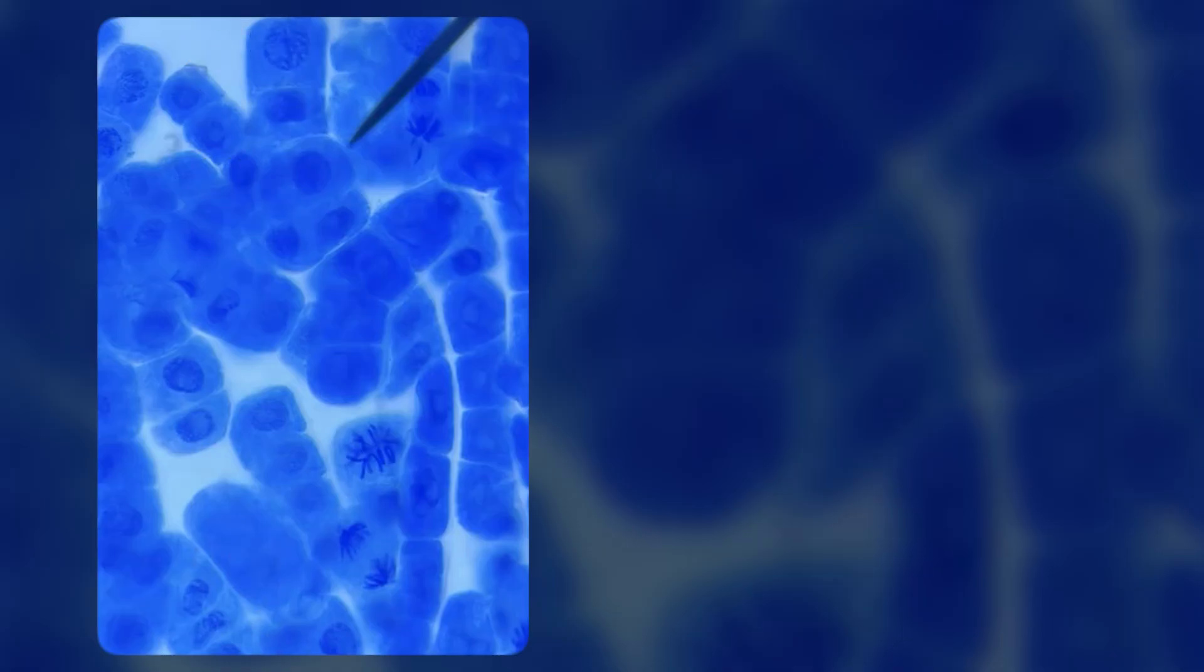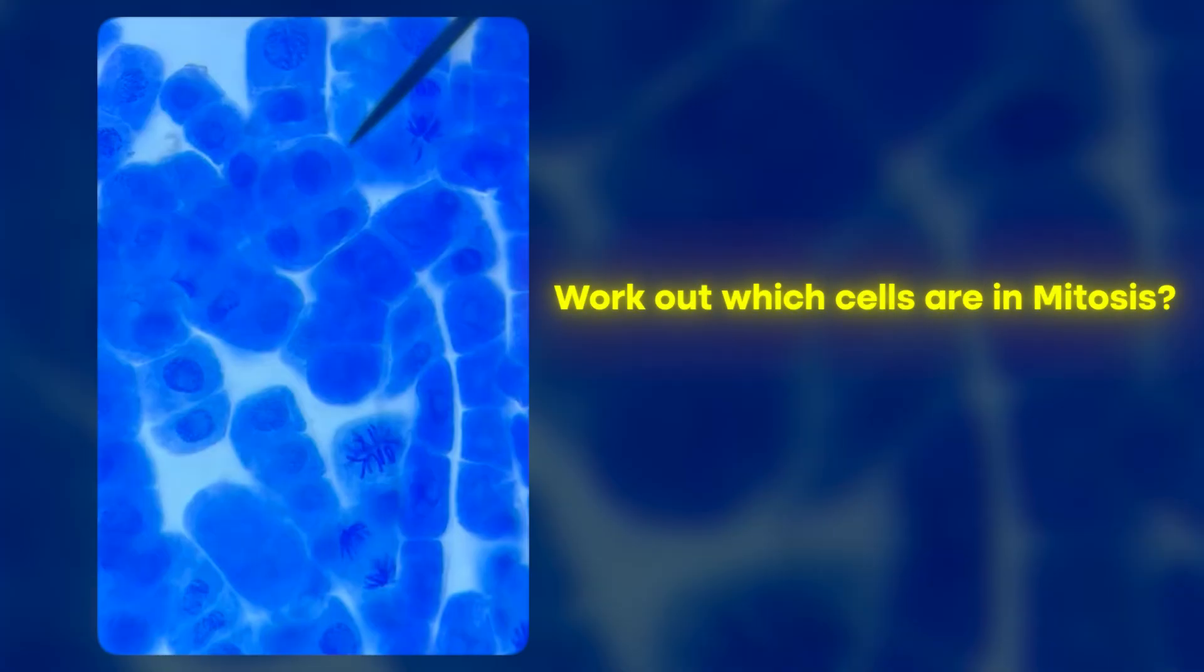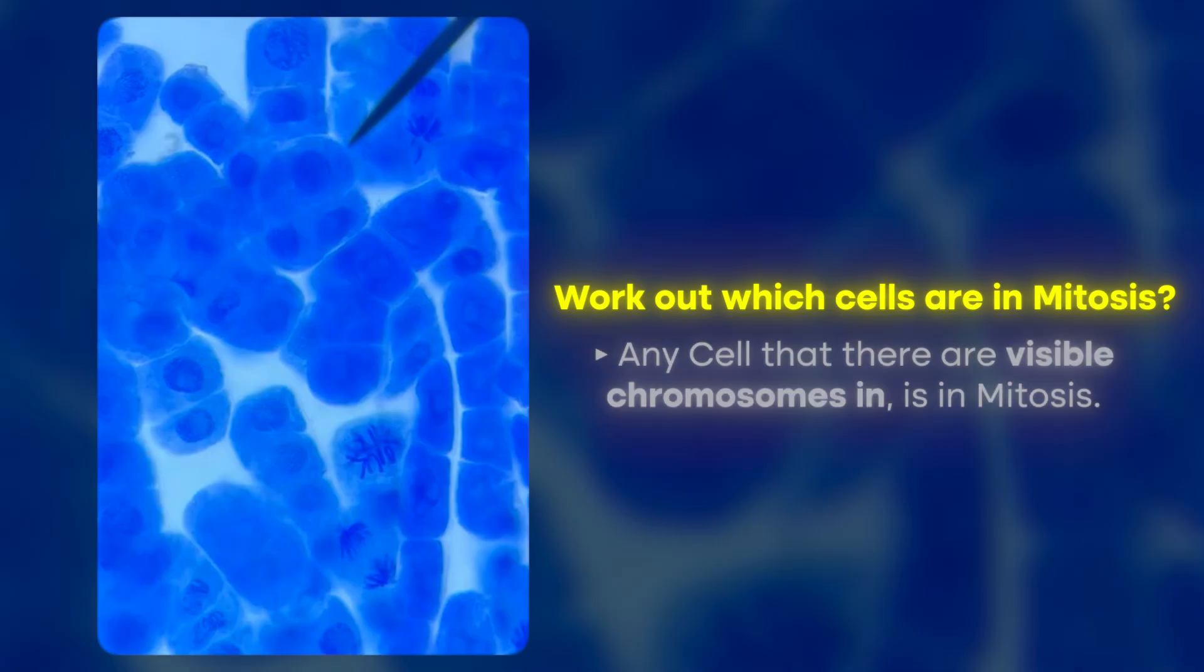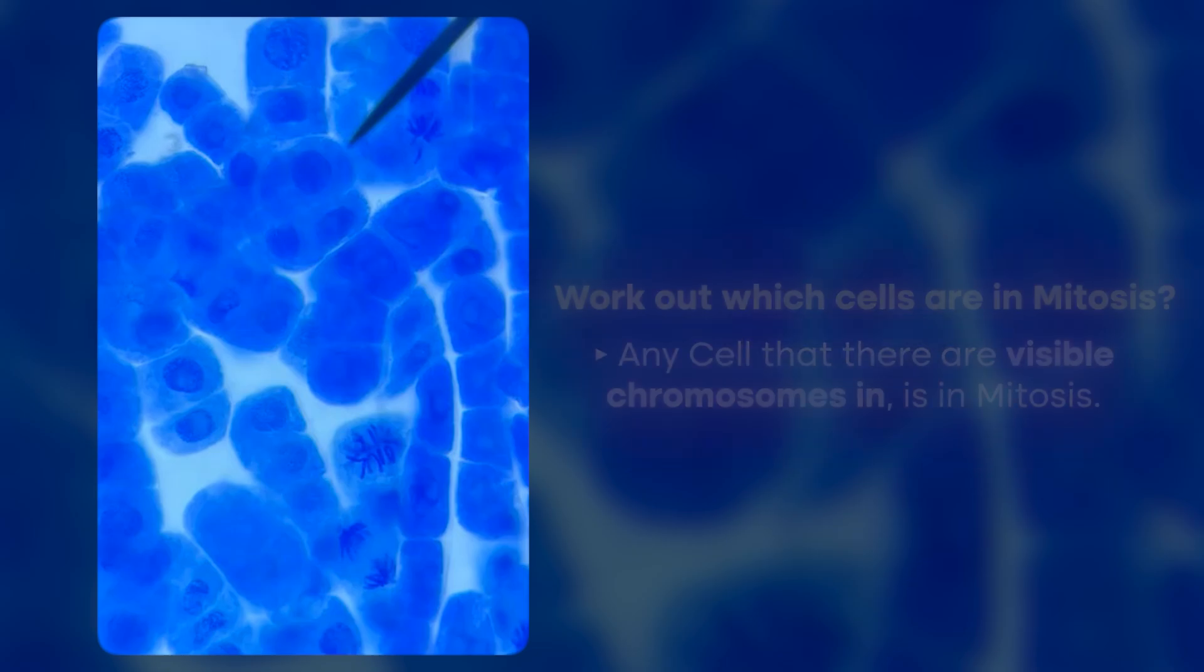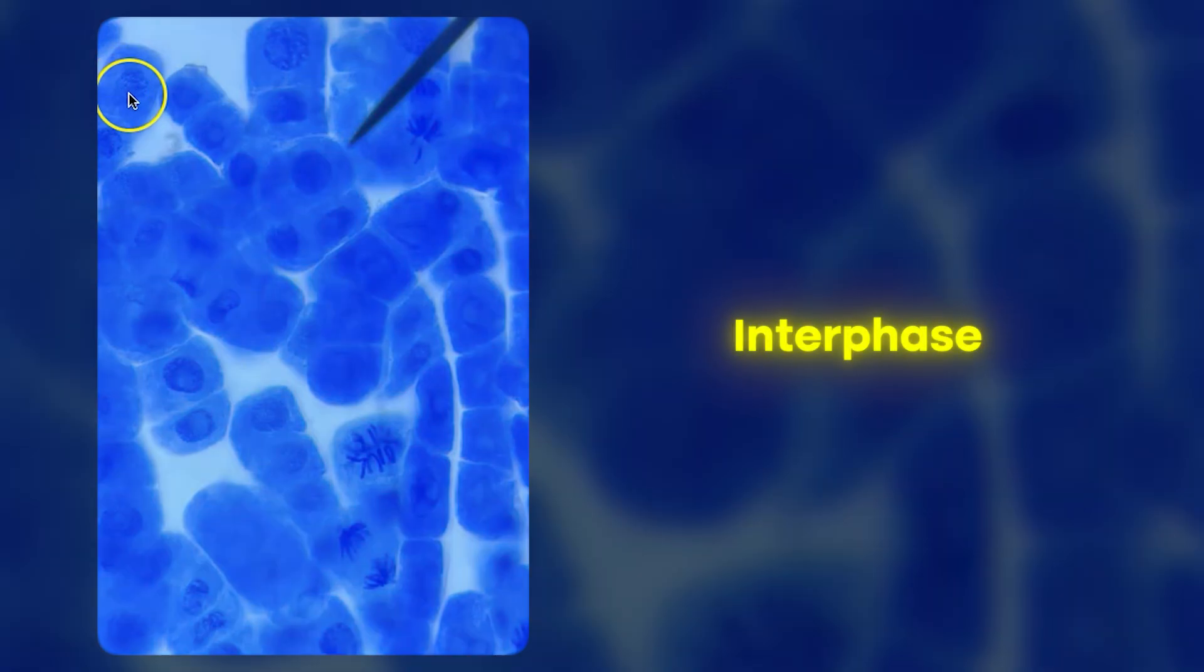Because if we go through this one, it's going to be really hard to count all the cells without losing track unless you can cross them off. The first thing I would do then is work out which cells are in mitosis. What you need to tell your students for this is any cell that there are visible chromosomes in is in mitosis.